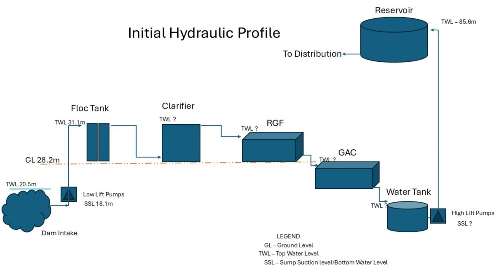Clarified water flows from the top of the clarifier by gravity to the rapid gravity filters — there is a deliberate difference in top water level between the two to allow gravity flow. From the rapid gravity filters, water is collected at the bottom and flows by gravity to the GAC filters. The top water level of the GAC should be at the same level as, or slightly lower than, the outlet of the RGF so that water can also flow by gravity.